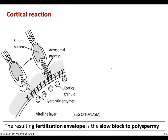Here again we see the cortical reaction process. Initially, the sperm releases its hydrolytic and proteolytic enzymes from the acrosome, dissolving the jelly coat. Cortical granules are present inside the egg cytoplasm near the cortical region. The sperm head undergoes polymerization of actin molecules to form actin microfilaments, forming the acrosomal process coated by the binding protein. You can see the binding receptor on the cell membrane.